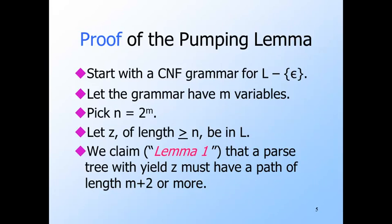We're going to prove first that any parse tree in a CNF grammar for a string Z of length at least N equals 2^m must have a path of length m plus 2 or more from the root to a leaf.